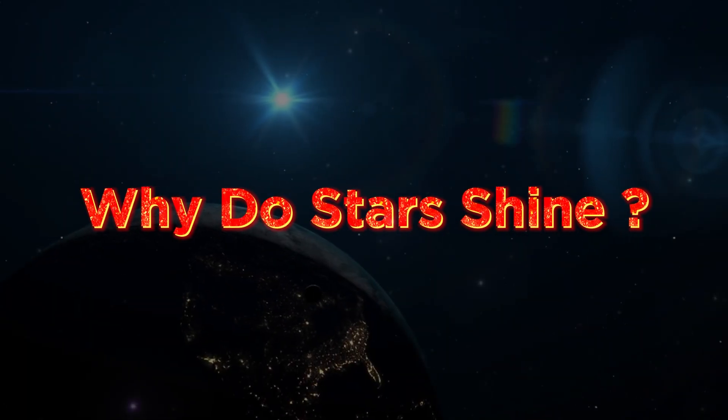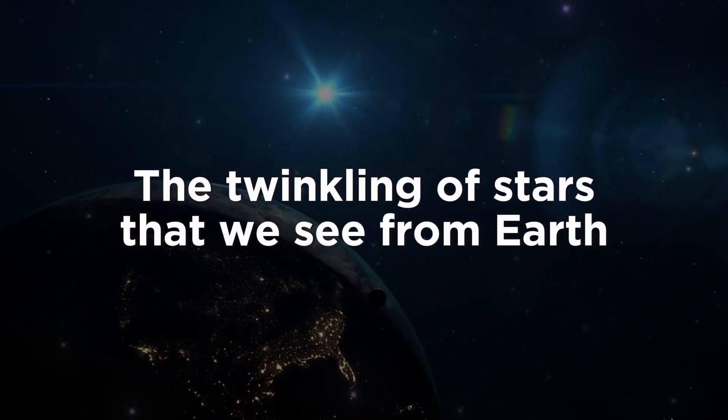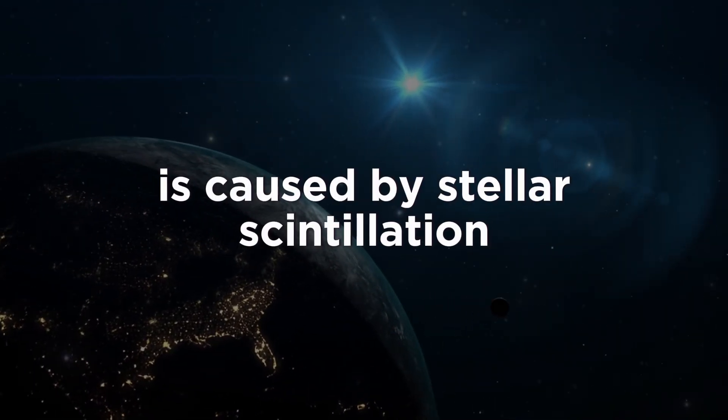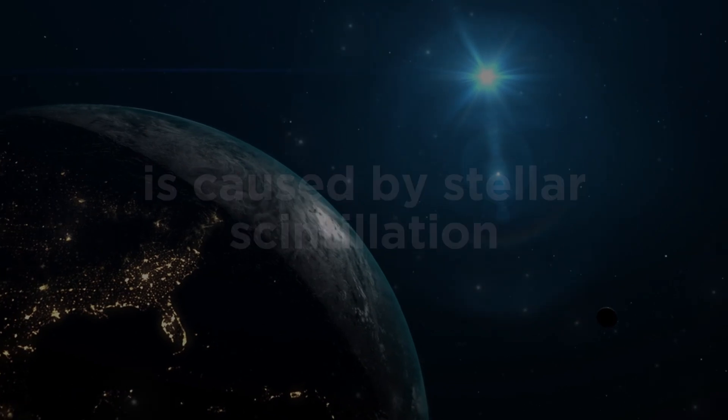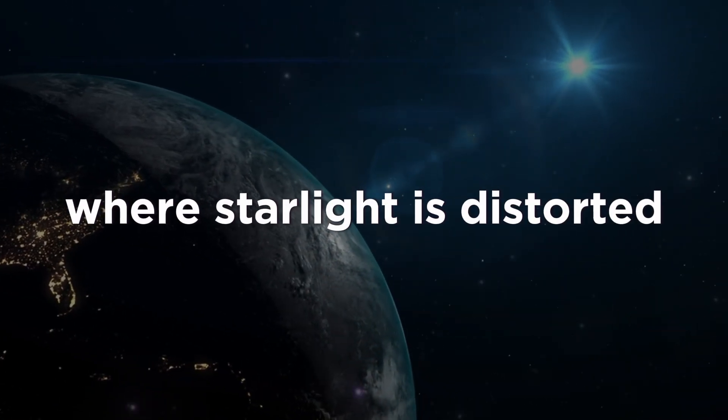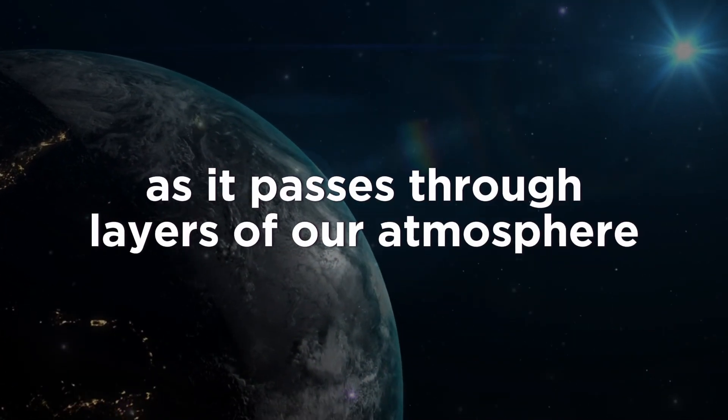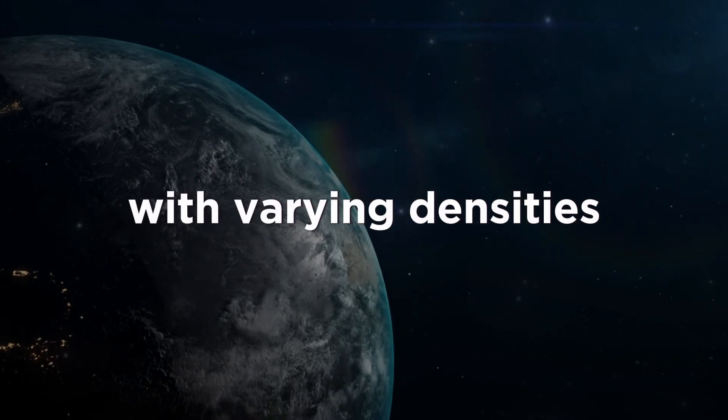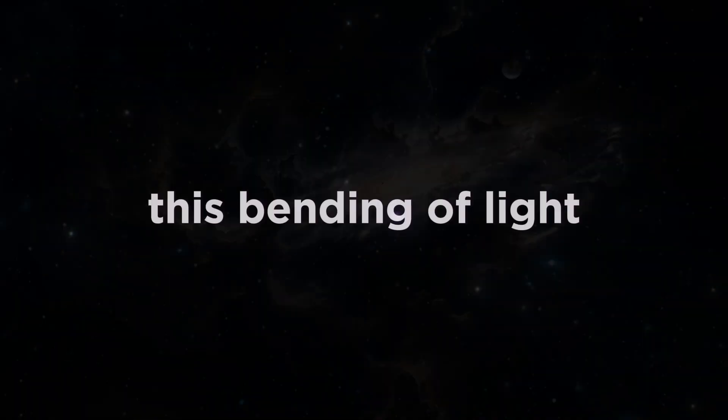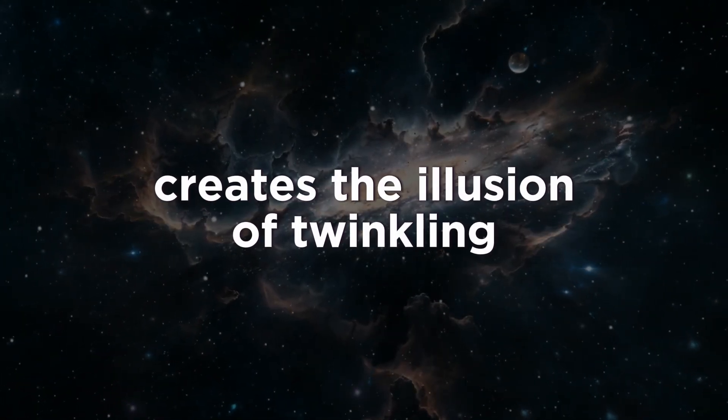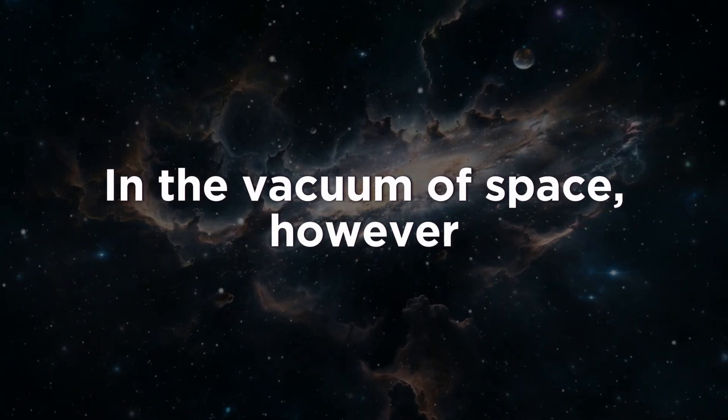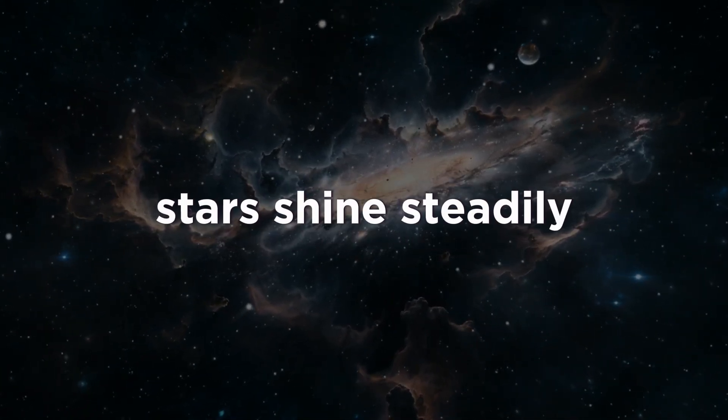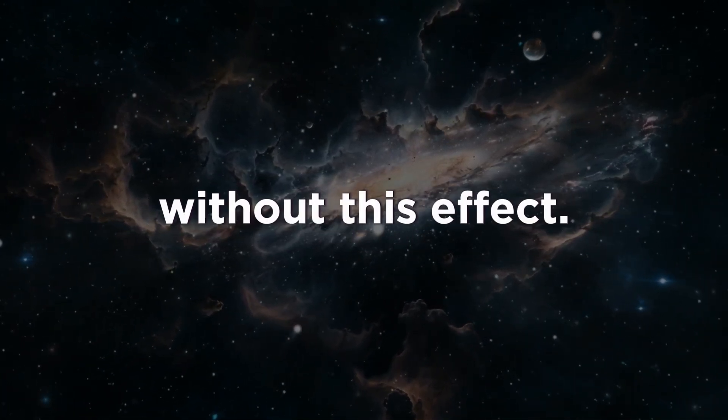Why do stars shine? The twinkling of stars that we see from Earth is caused by stellar scintillation, a phenomenon where starlight is distorted as it passes through layers of our atmosphere with varying densities. This bending of light creates the illusion of twinkling. In the vacuum of space, however, stars shine steadily without this effect.